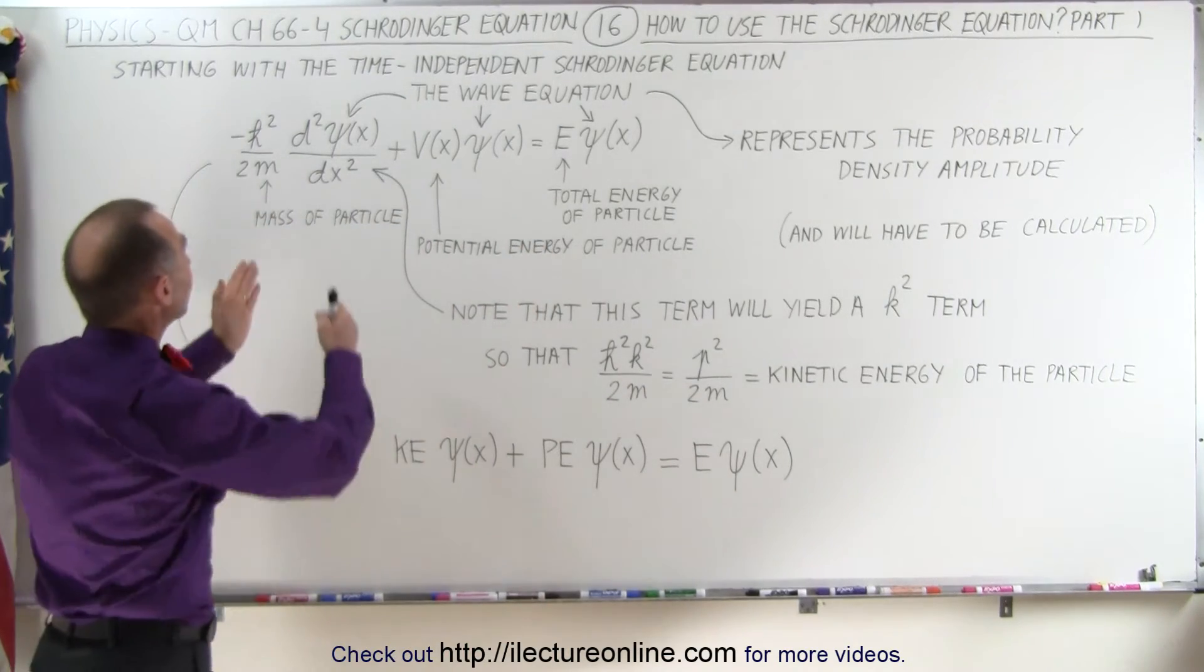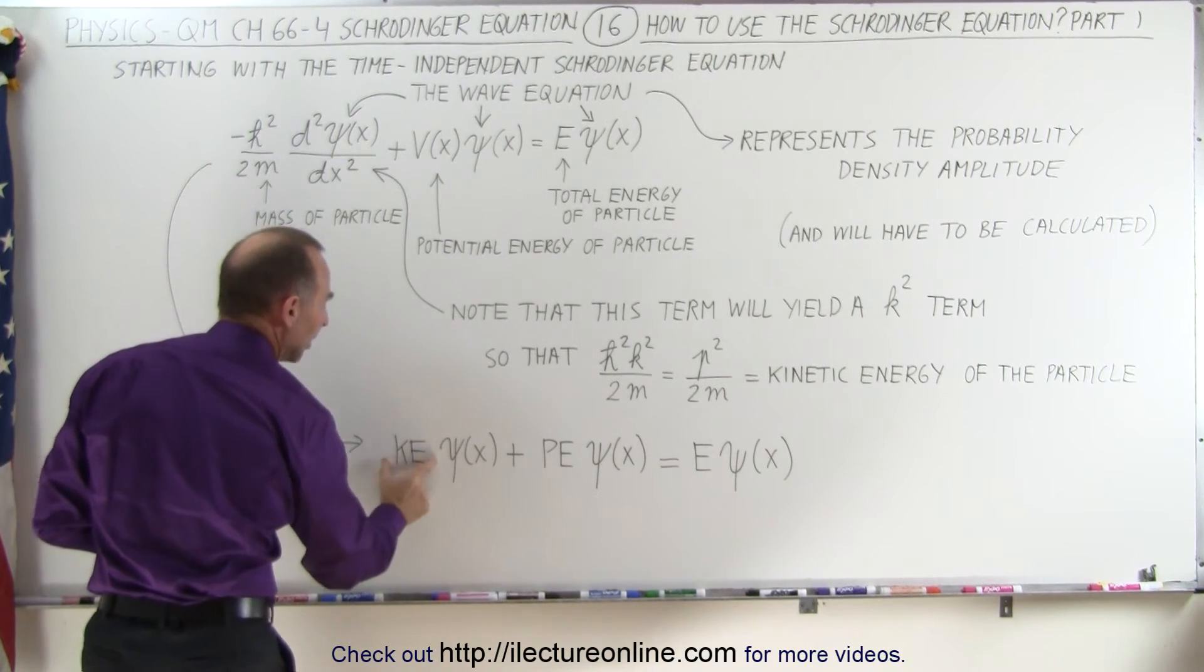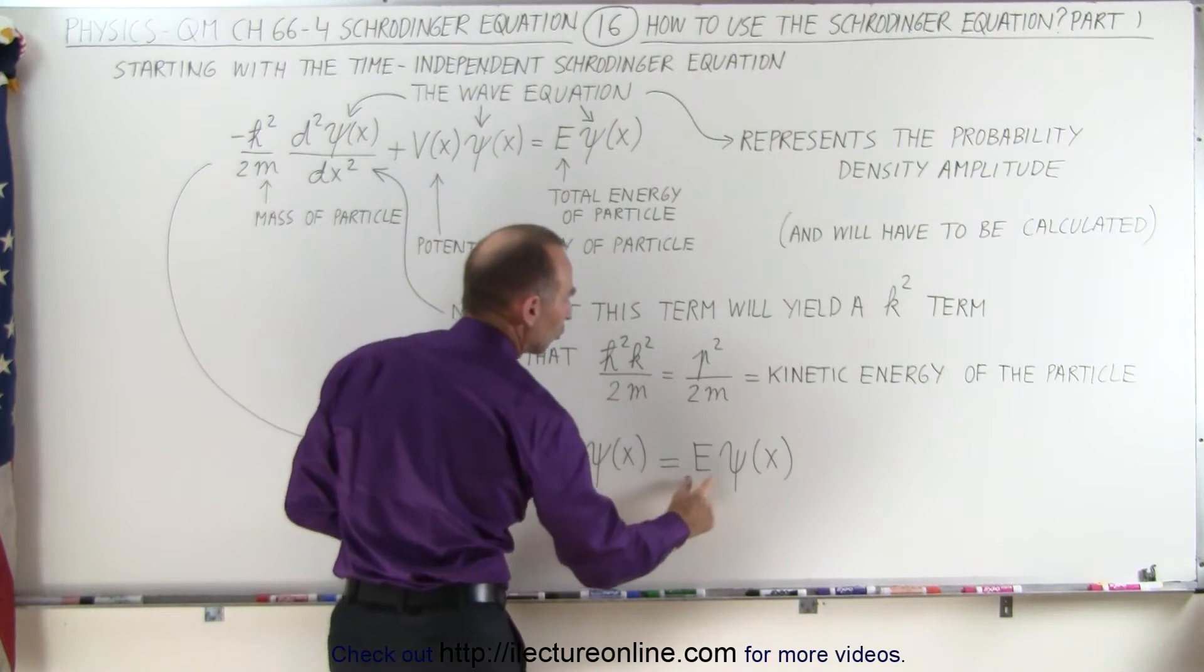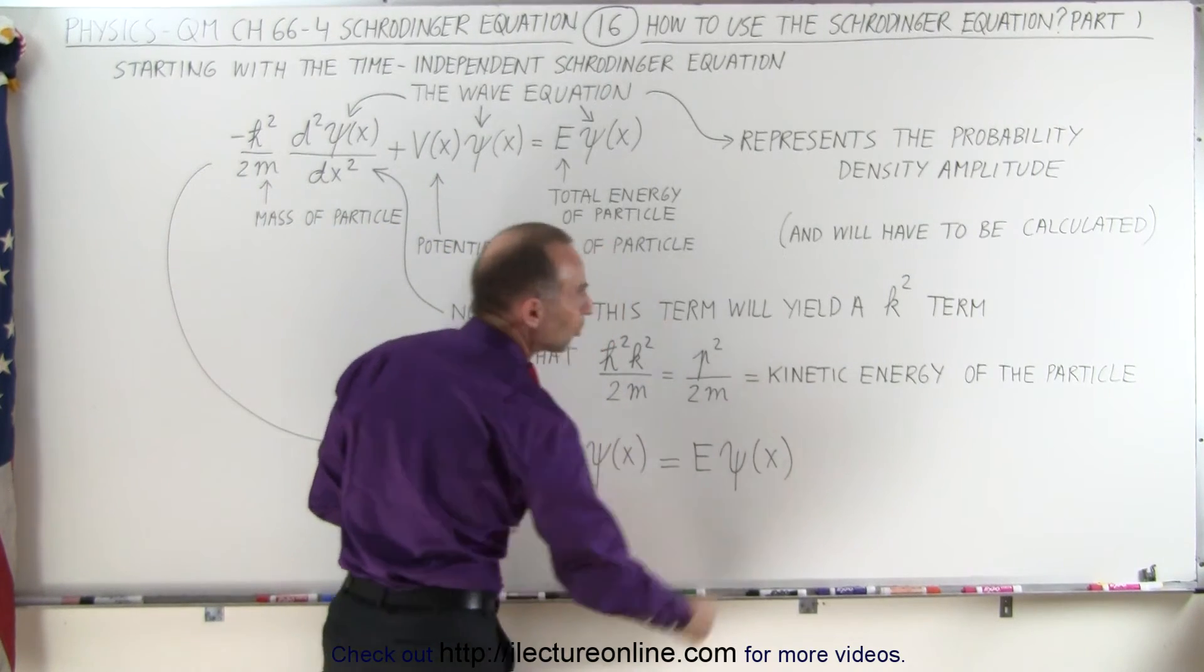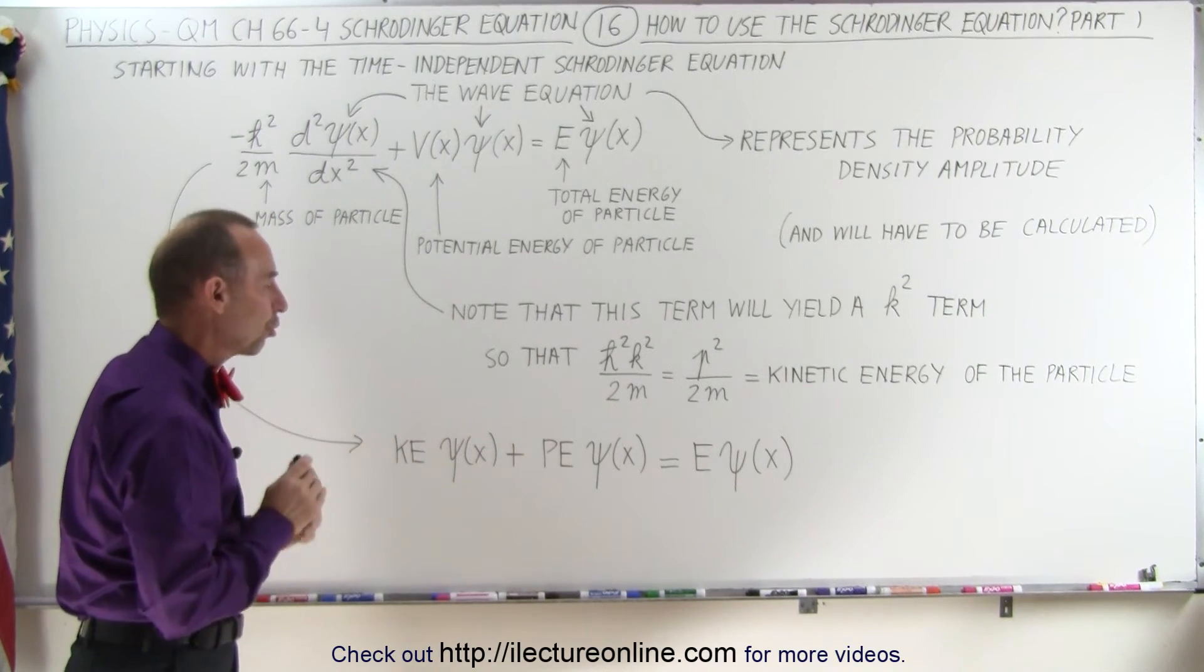So notice that the Schrodinger equation, which is time independent, simply states that we have the kinetic energy times the wave function, plus the potential energy times the wave function, equals the total energy of the particle times the wave function. And that's the general structure of the Schrodinger equation.